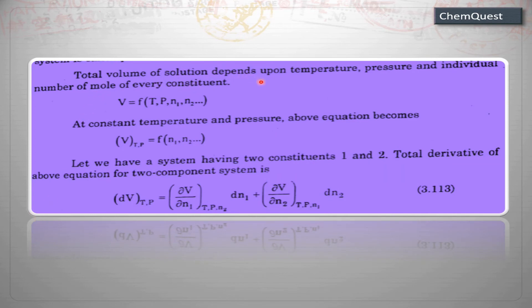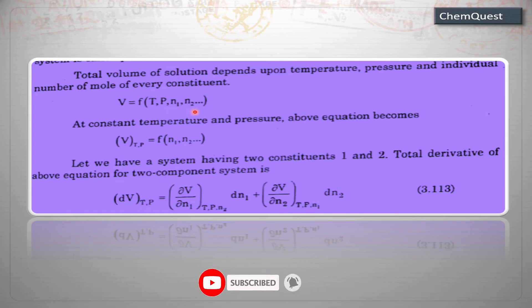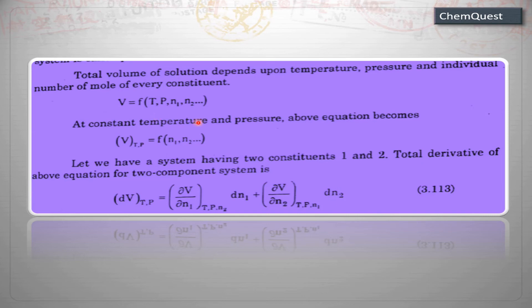The total volume of a solution depends upon temperature, pressure, and the individual number of moles of every constituent. In other words, volume is a function of temperature, pressure, number of moles of component 1, and number of moles of component 2. At constant temperature and pressure, this reduces to V being a function of only n₁ and n₂.